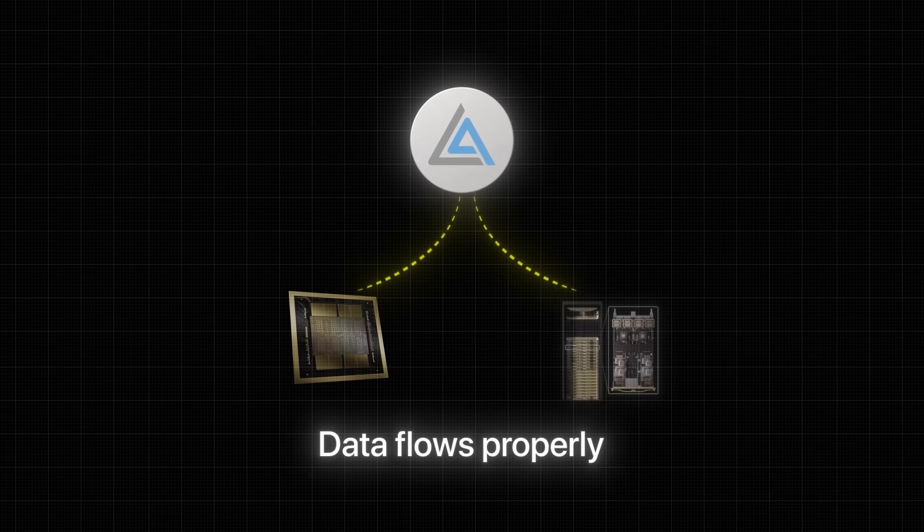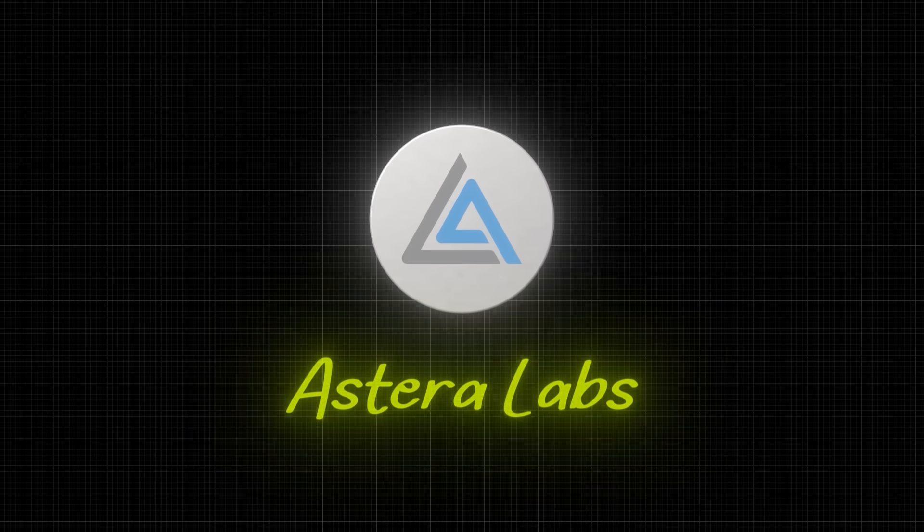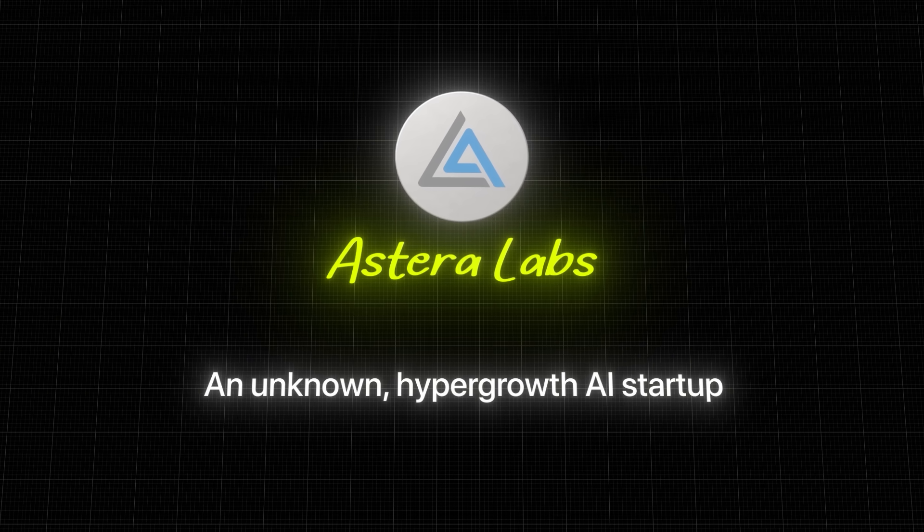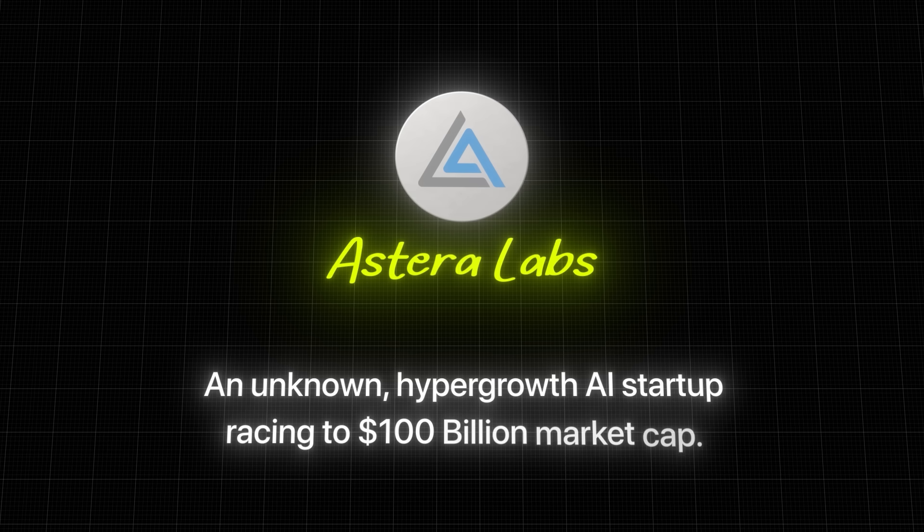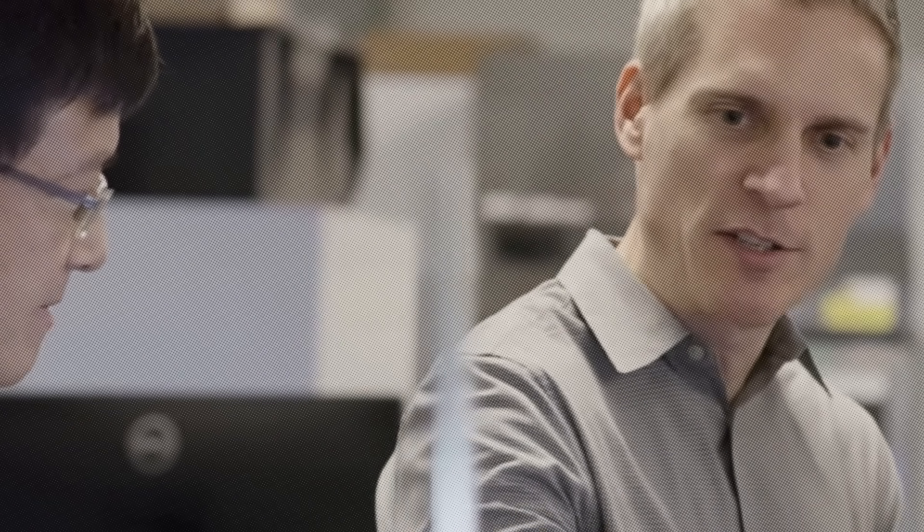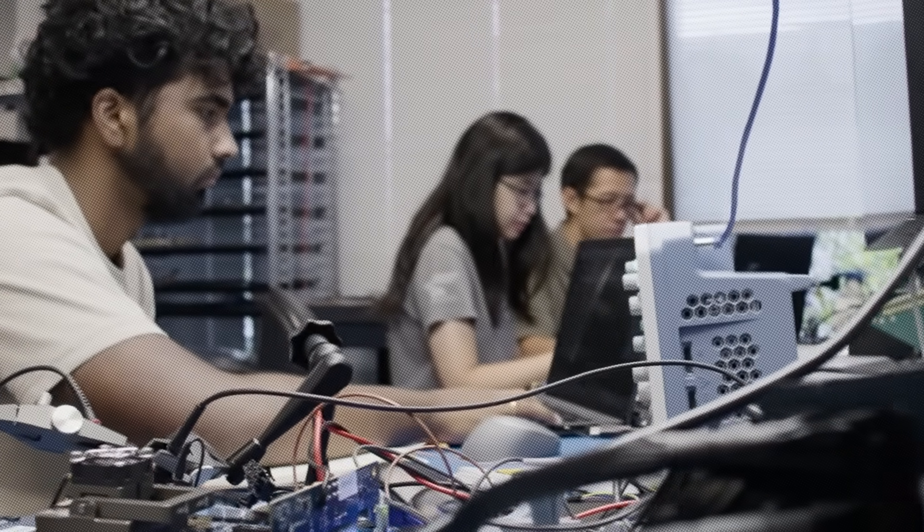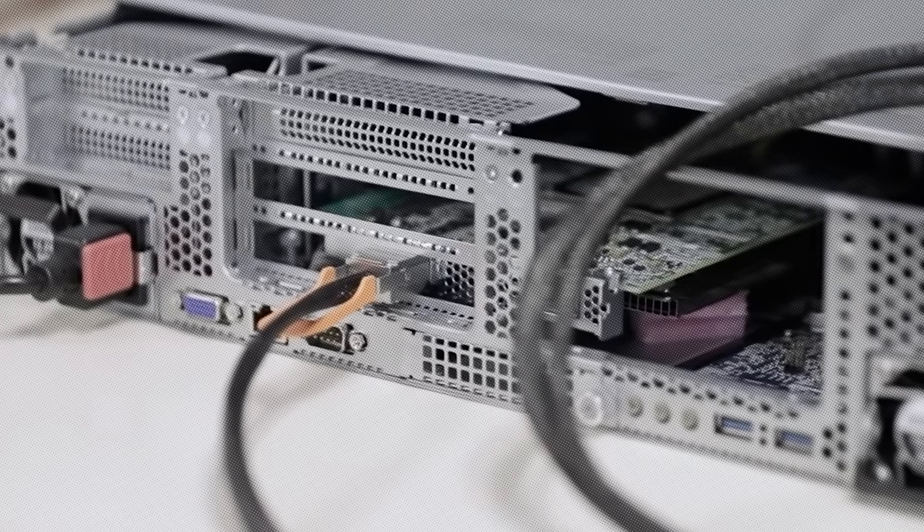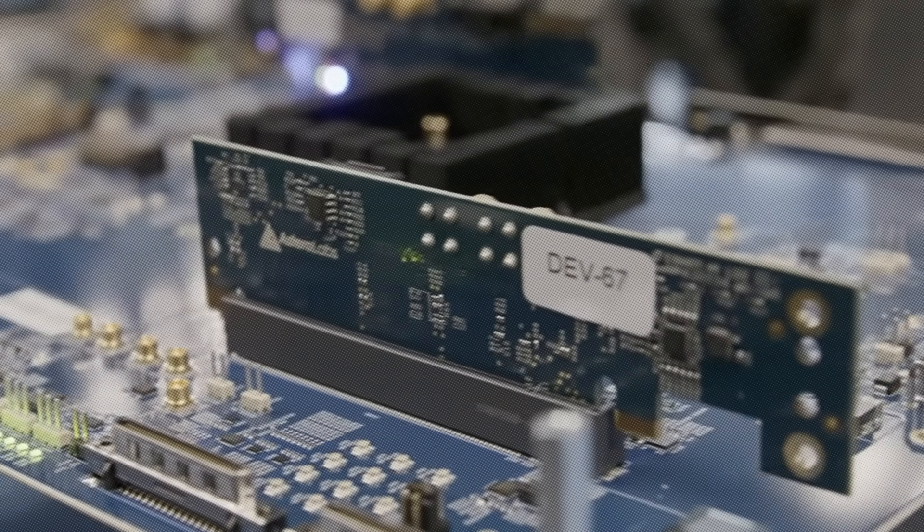Because what if I told you that buried in every one of those systems, making sure the data flows properly, sits Astera Labs, an unknown hyper-growth AI startup, racing to $100 billion market cap faster than any public company in history. They're not trying to strike gold in the AI rush. They're not even selling shovels. They're selling the thing everyone forgot they needed. The wagons to carry the gold back home.